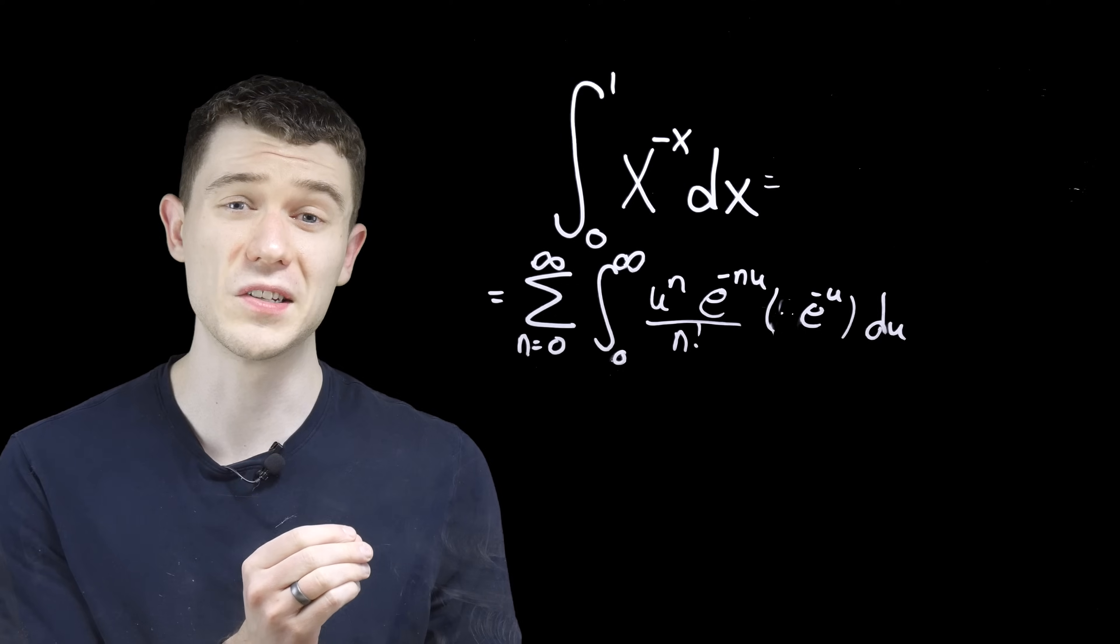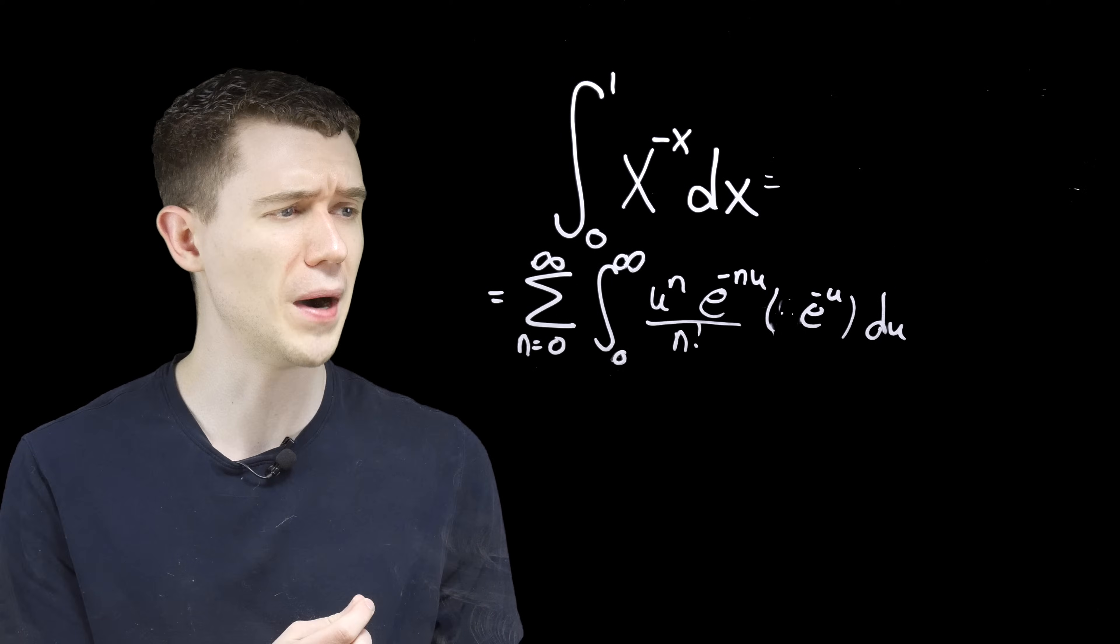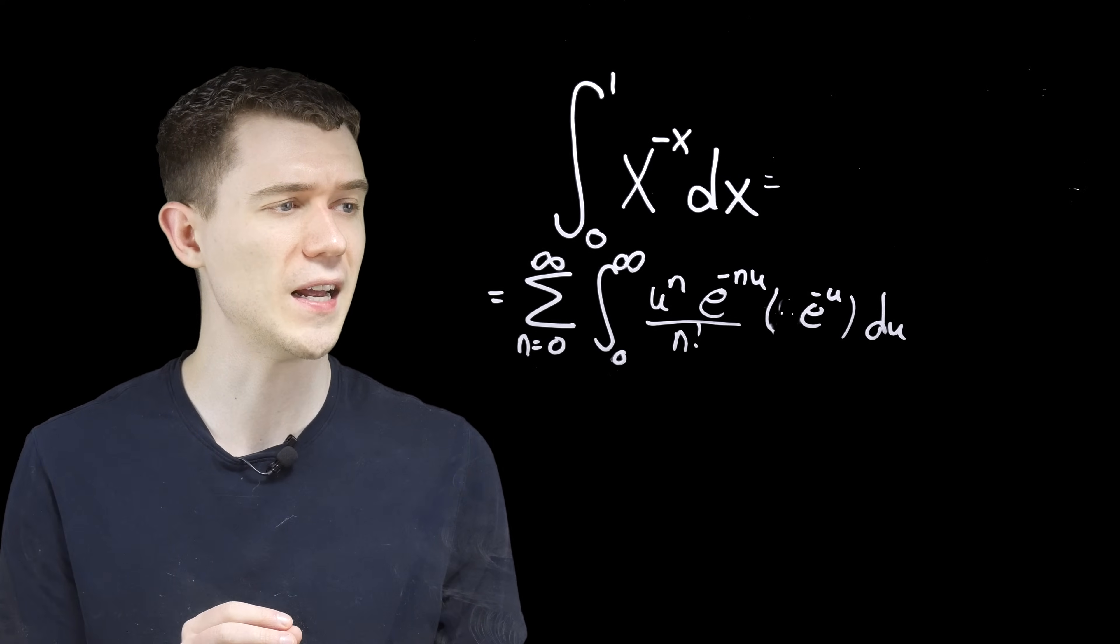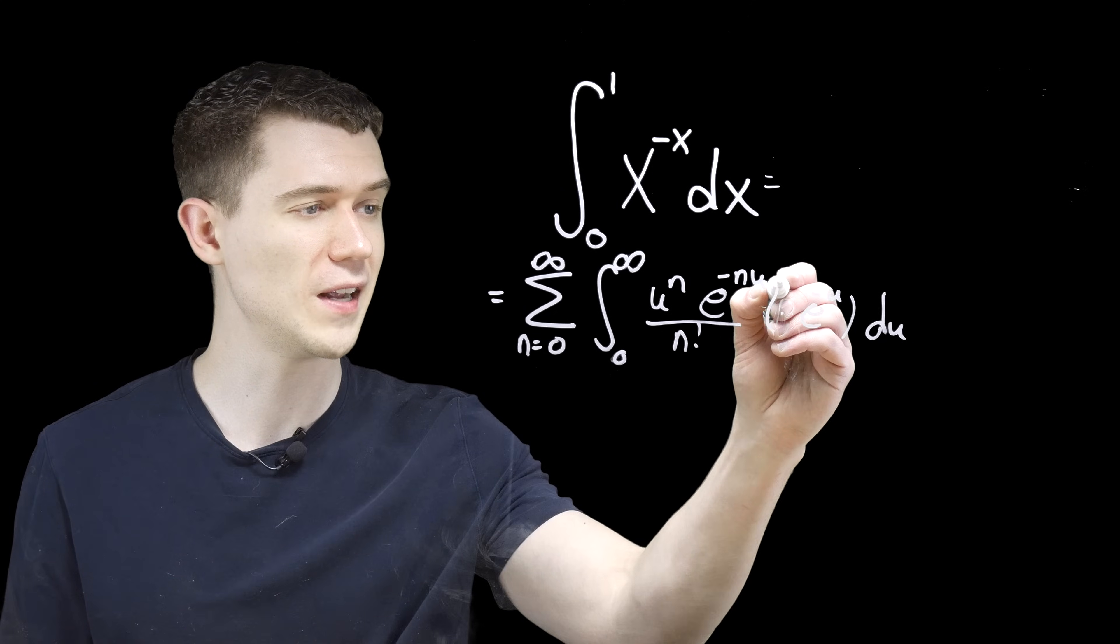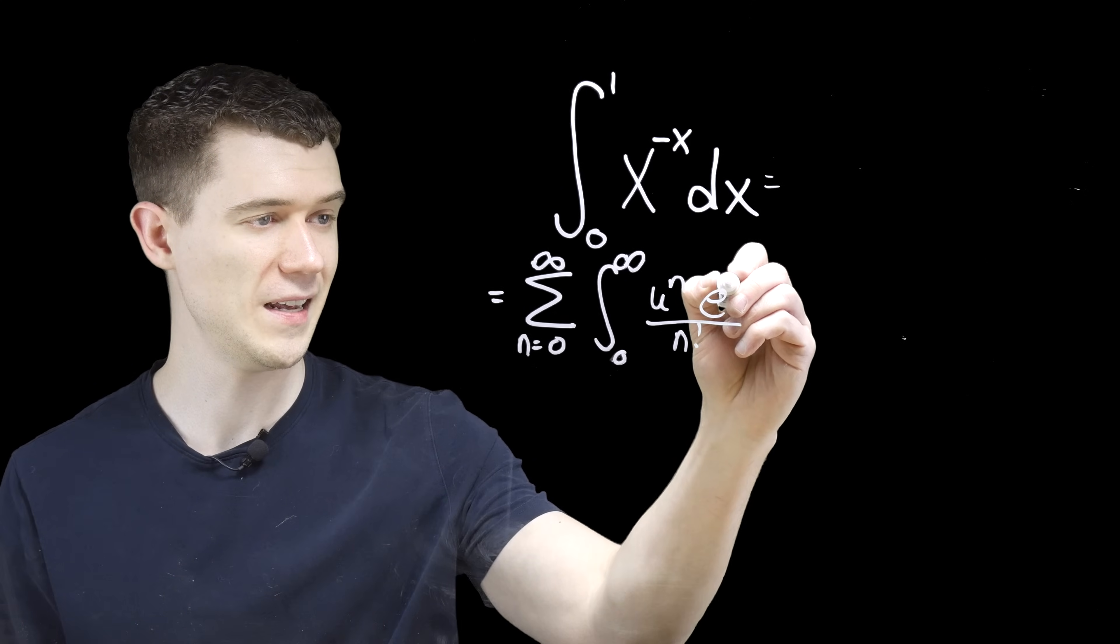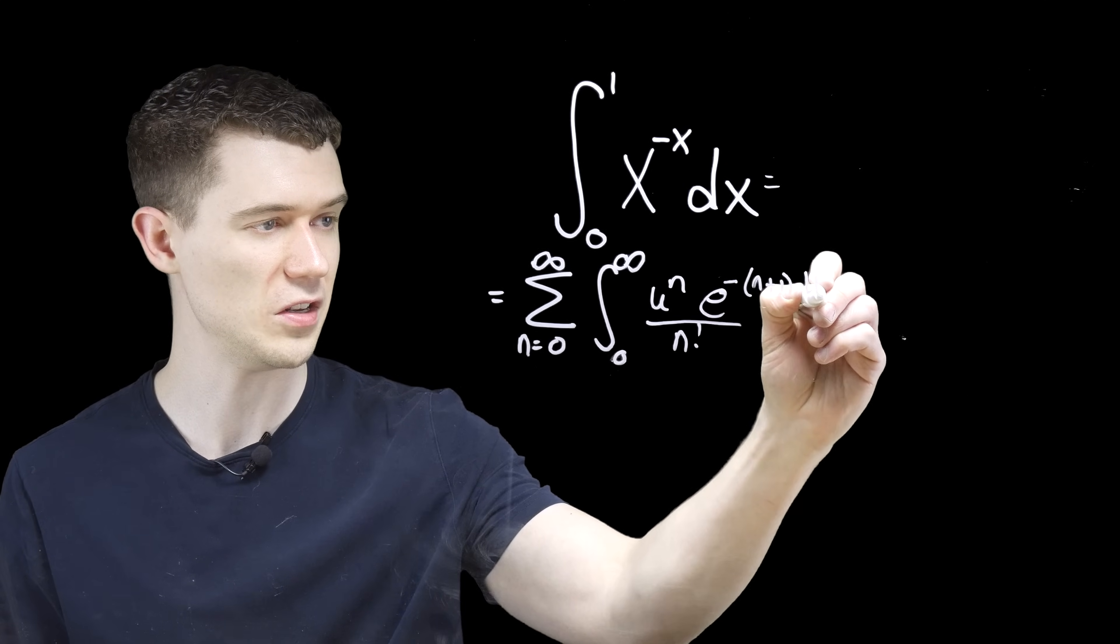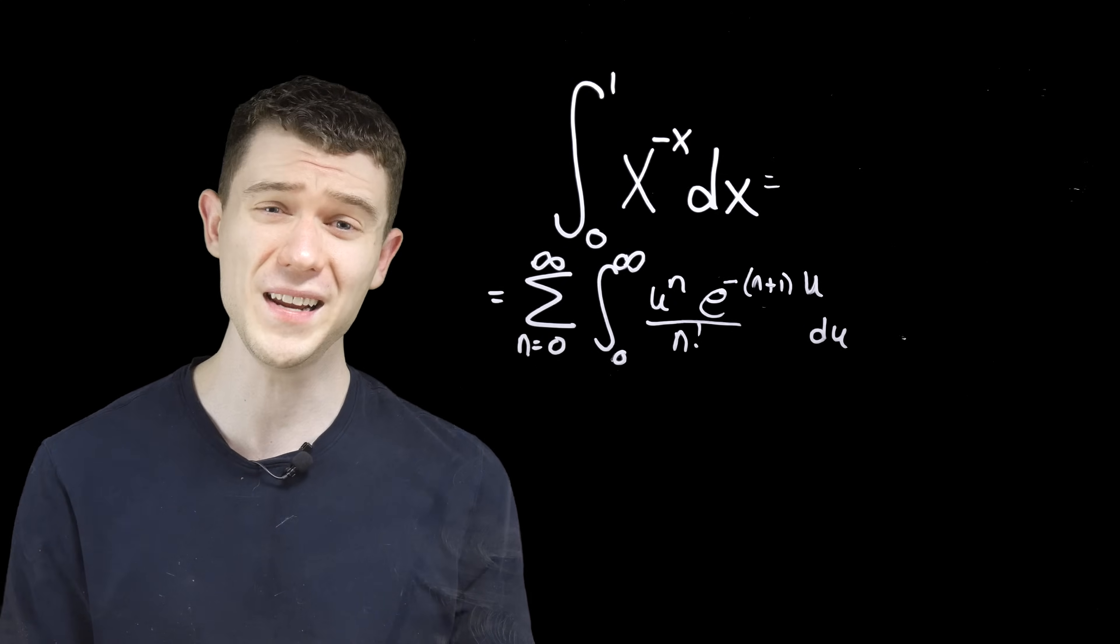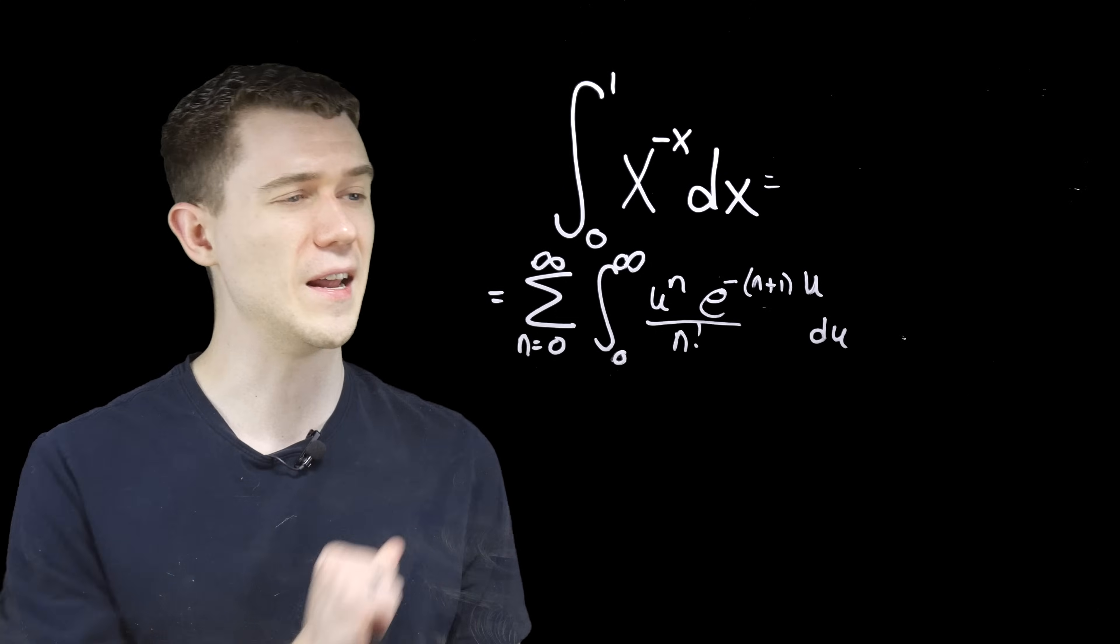Now, since we have some like bases going on here, e to the minus nu, e to the minus u, let's combine those, get a common base e, e to the minus nu minus another u. We could rewrite this factoring out the u as e to the minus n plus 1 times u. Looks a lot nicer, I think. So we're getting somewhere.